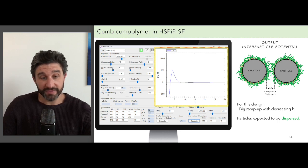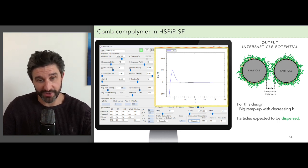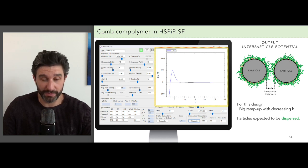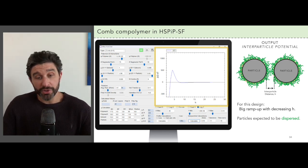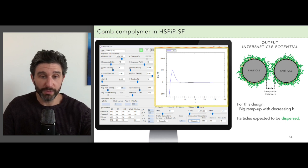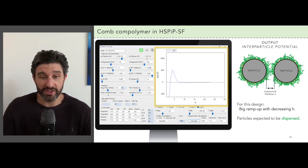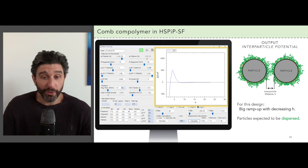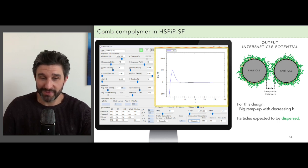Here, the height of the hump is around 500 times room temperature energy, which means that the particles are very likely to remain dispersed. A crucial point to note here is that this comb polymer design offers all the advantages for keeping particles dispersed while really avoiding the possibility of bridging flocculation by design.